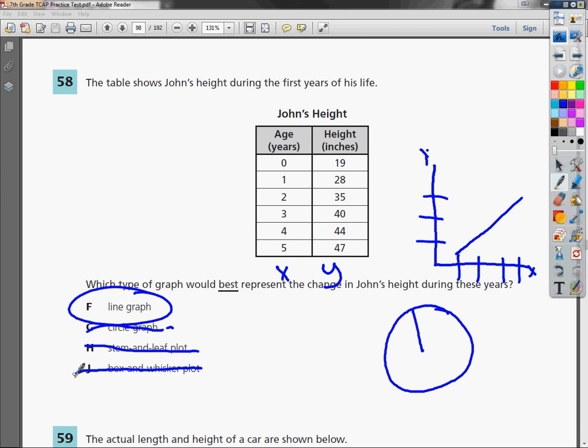Not here, he's just getting taller. The line graph is a perfect representation of that because we can use an x and a y. Everything works out perfect, so I'm going to say the answer to number 58 is F.